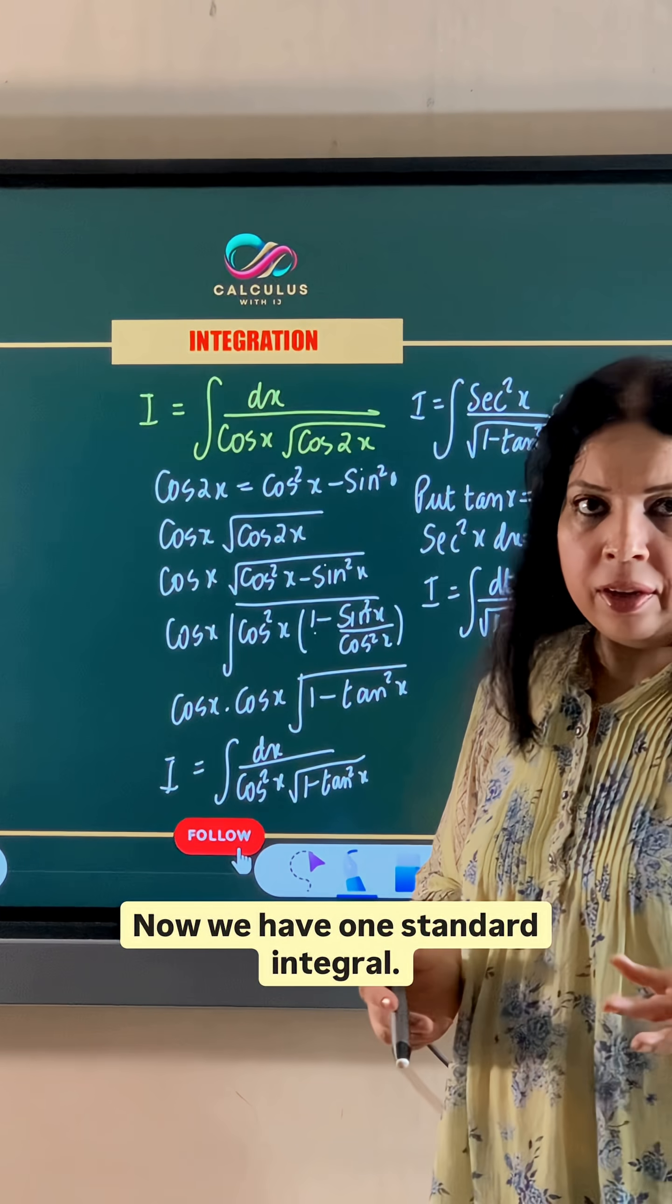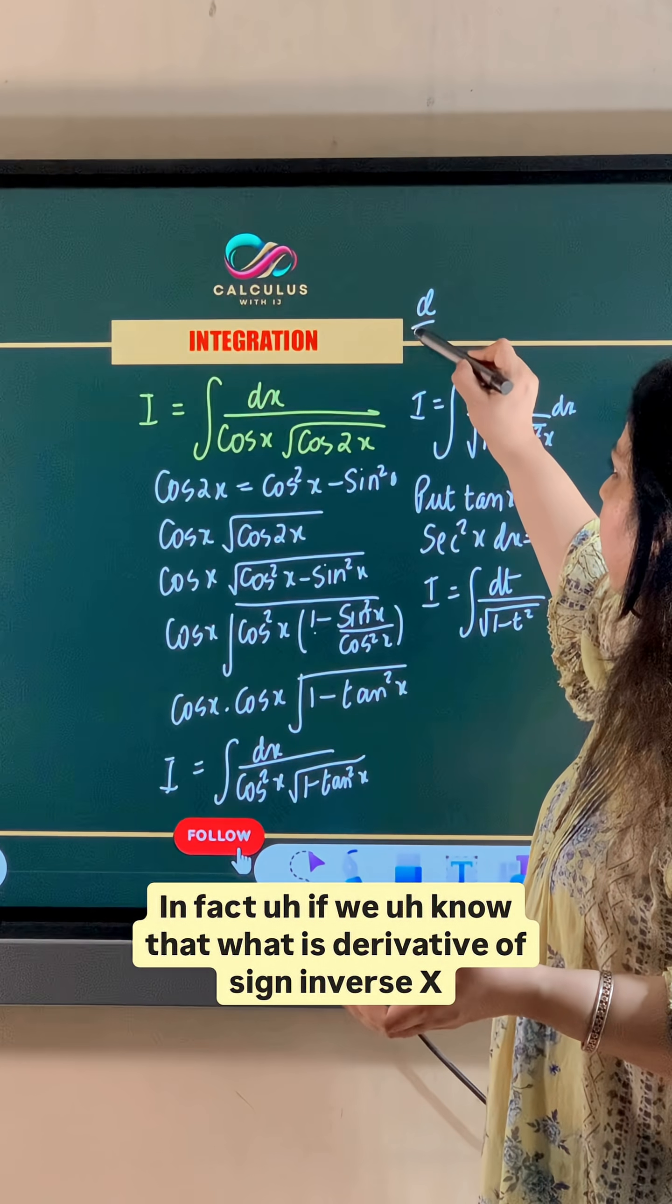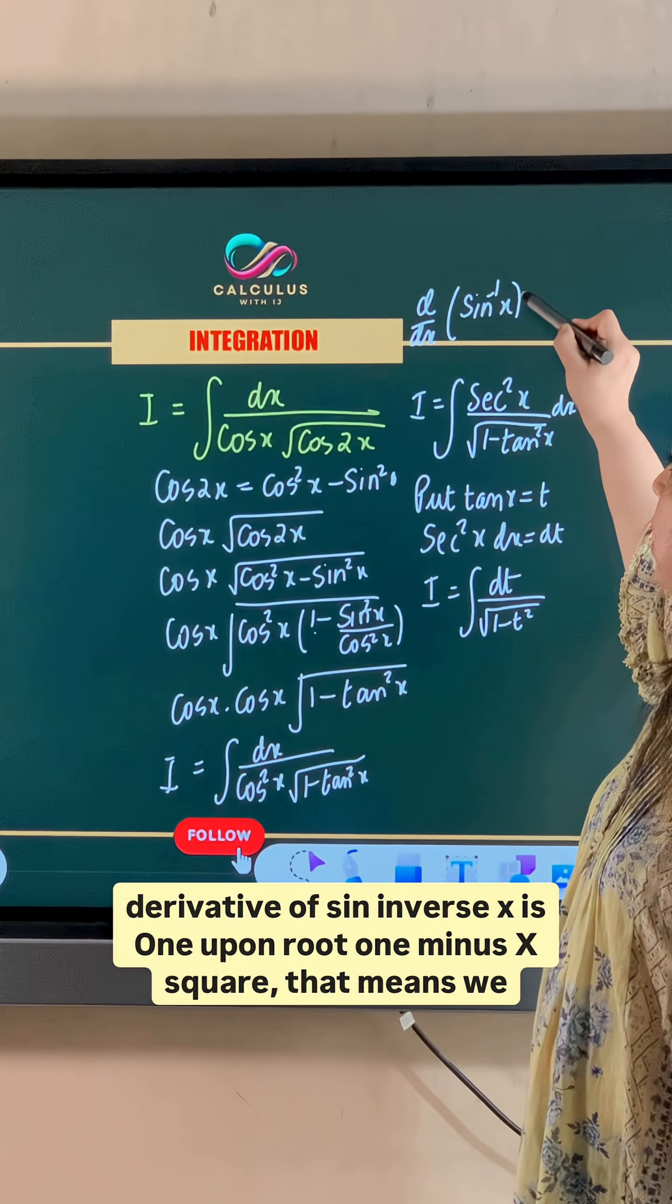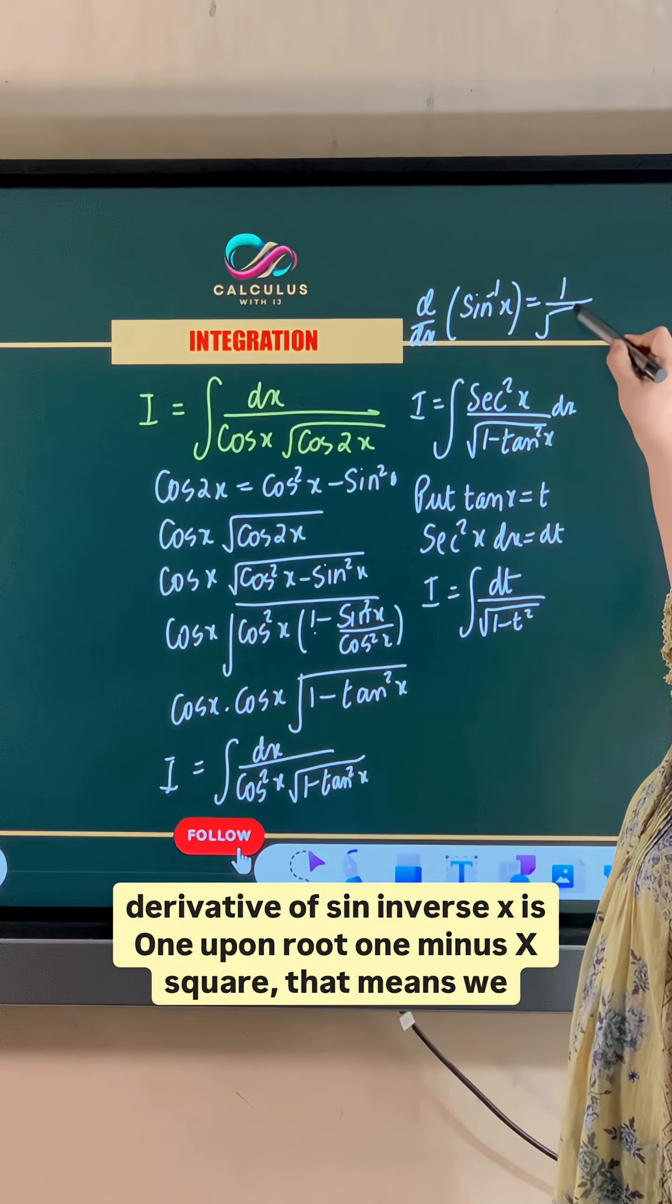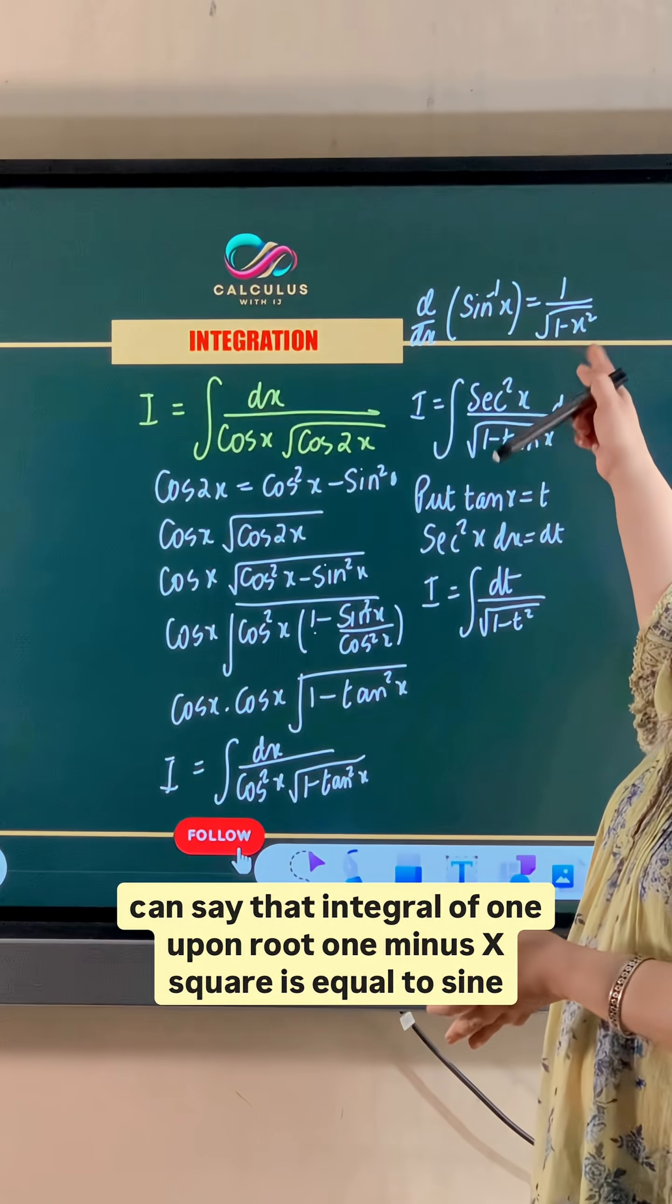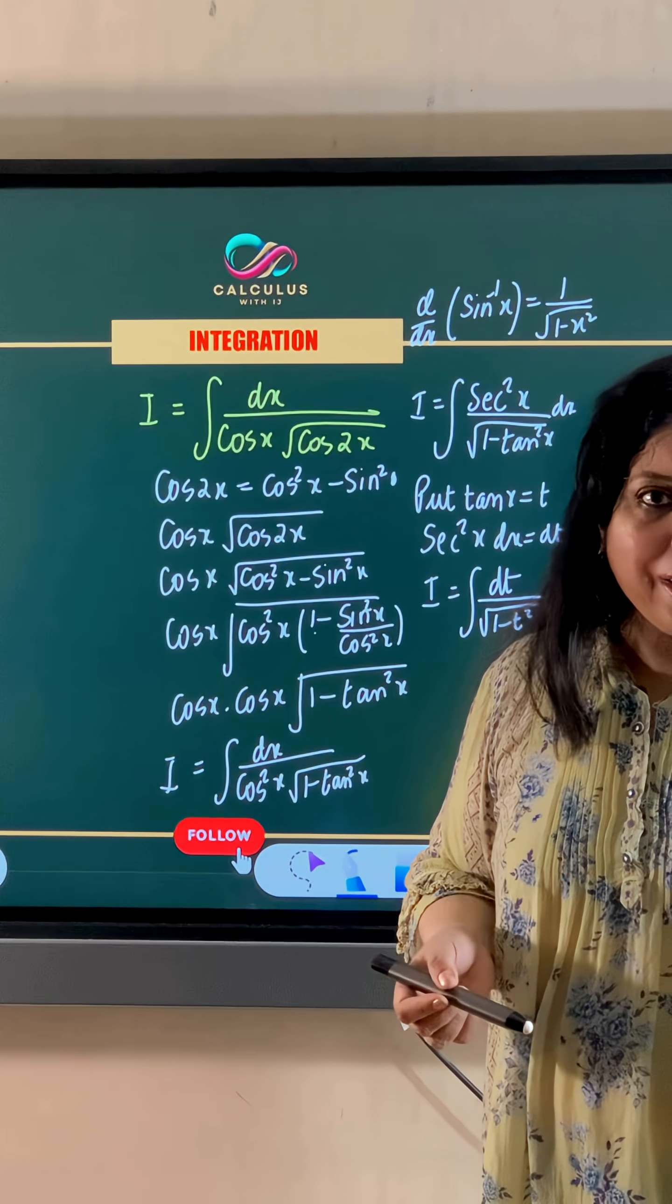Now we have one standard integral. In fact, if we know that what is derivative of sin inverse x, derivative of sin inverse x is 1 upon root 1 minus x square. That means we can say that integral of 1 upon root 1 minus x square is equal to sin inverse x.